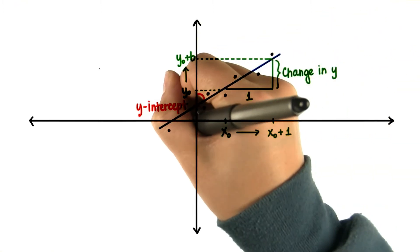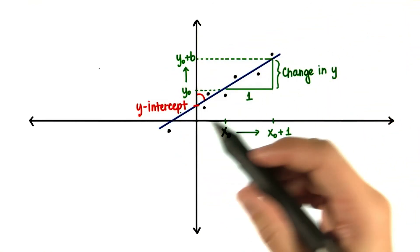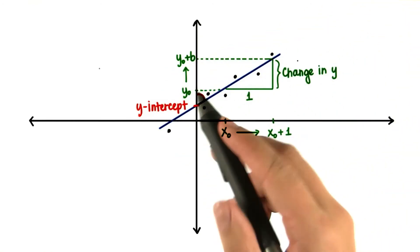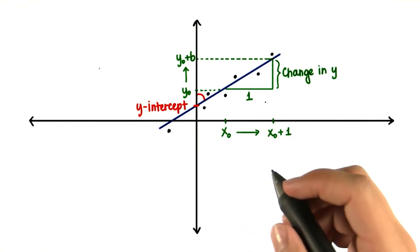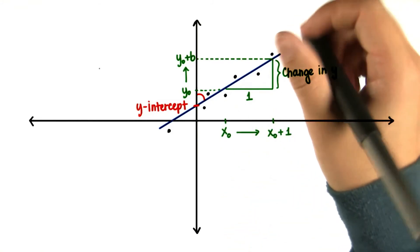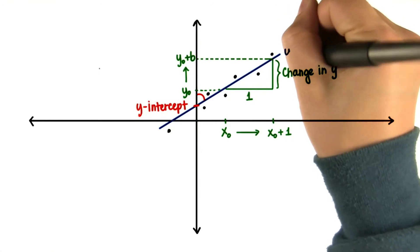But remember, in the case of regression, this line represents how much y is expected to change when x changes by one unit. Therefore, when we write the equation for this line, we denote it by y hat.